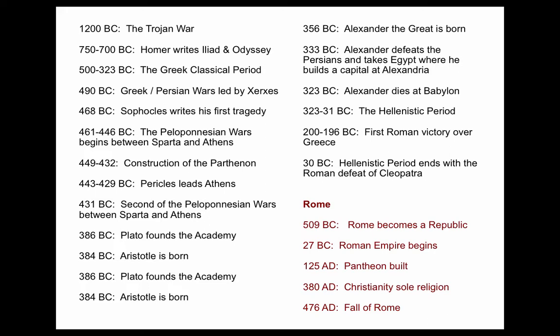Alexander's conquest includes Egypt, where he builds Alexandria as a new capital. Alexandria is the center of Greek culture until it's overthrown in 30 BC by the Romans when they defeat Cleopatra. Just to orient: 509 BC is when Rome becomes a republic; 27 BC, Rome becomes an empire; 125 AD the Pantheon is built; versus 449 BC, the construction of the Parthenon. You can refer back to this to get oriented over this thousand-year period.